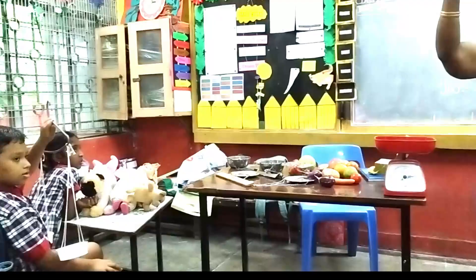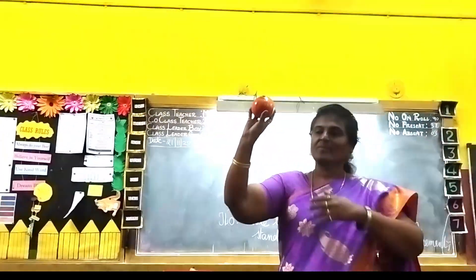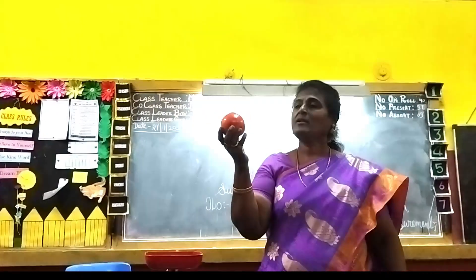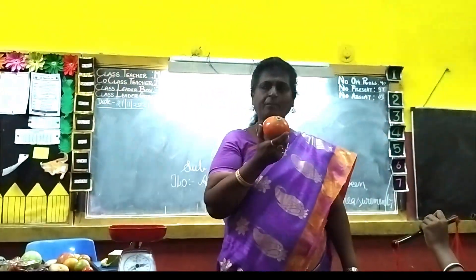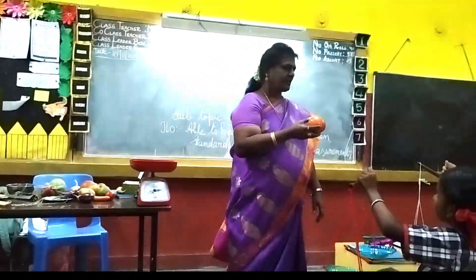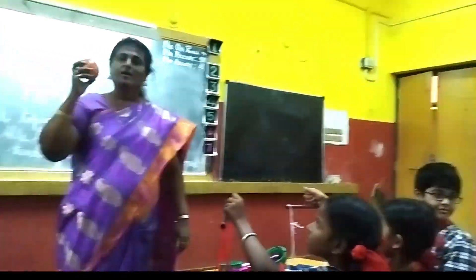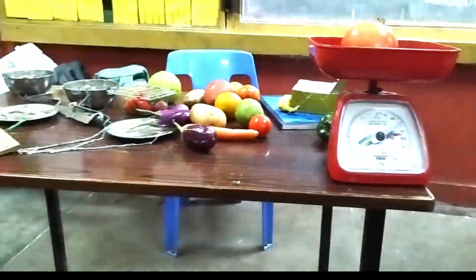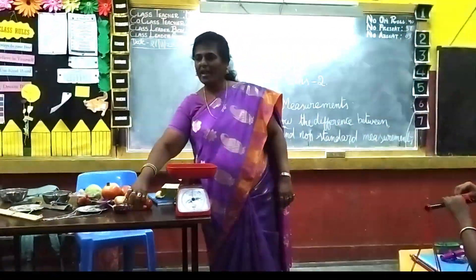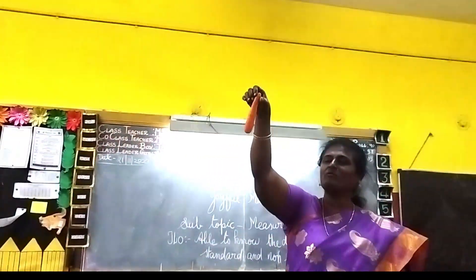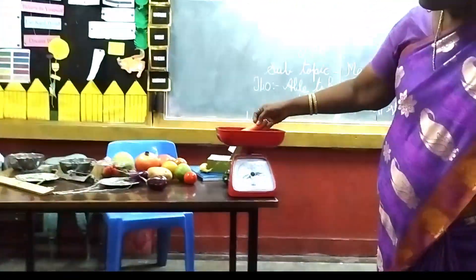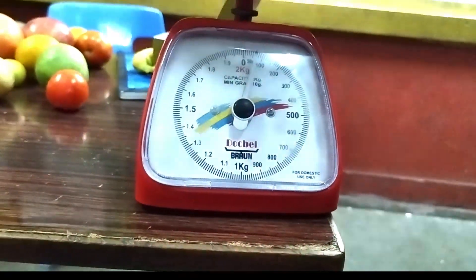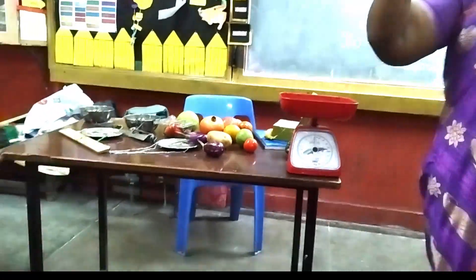Can you guess what will be the weight of the pomegranate? 100 grams. 300 grams. Some are telling 300 grams. It is exactly 300 grams. So the weight of the pomegranate is 300 grams. Now I have a carrot in my hand — can you tell me what will be the weight? 100 grams. No, it is only 50 grams.